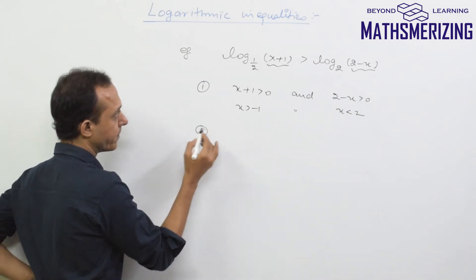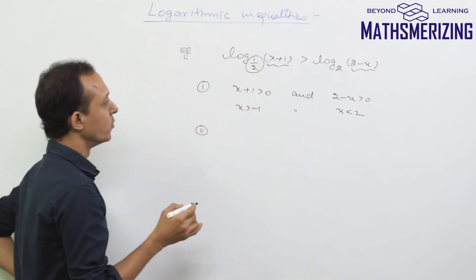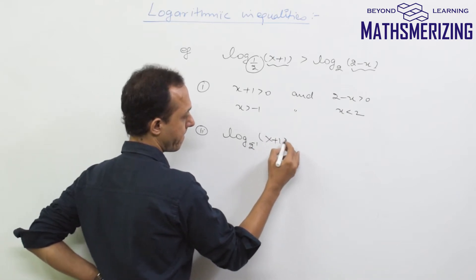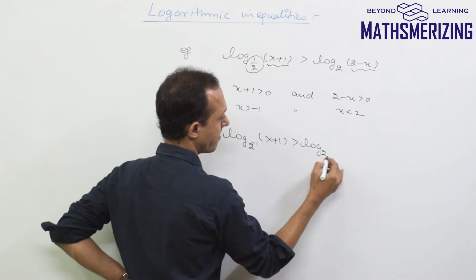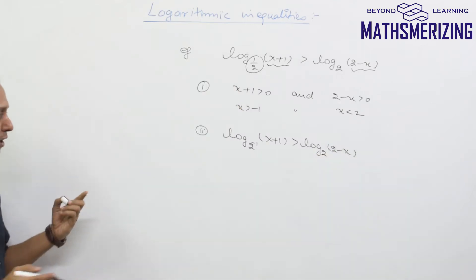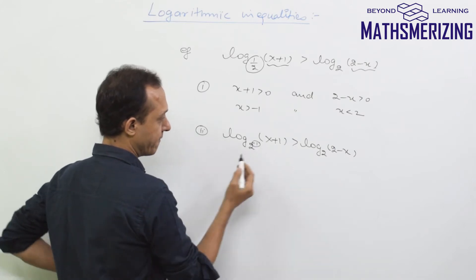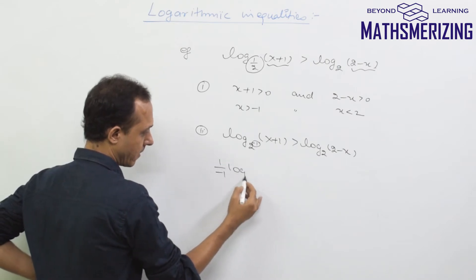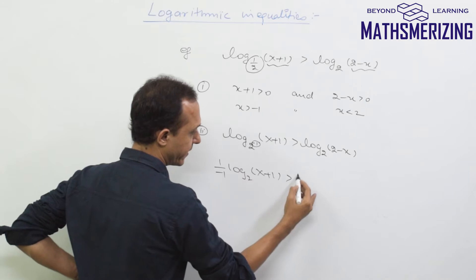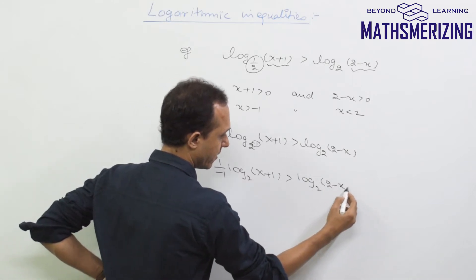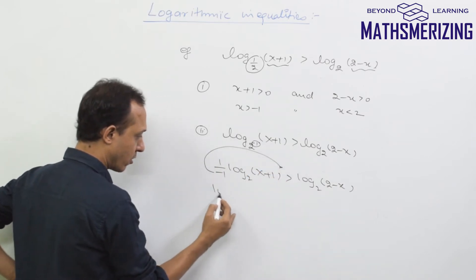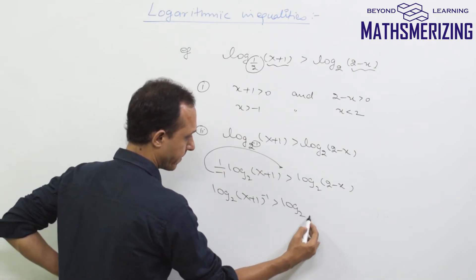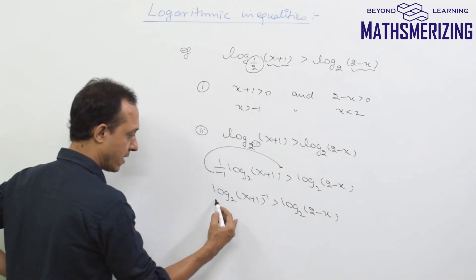Now I'll solve this inequality. I'll write the base 1/2 as 2 to the power minus 1. Using the property of exponents of the base, I'll take this minus 1 out, so I'll write: (1 upon -1) log(x+1) is greater than log(2-x). I can then write log(x+1) to the power minus 1 is greater than log(2-x).